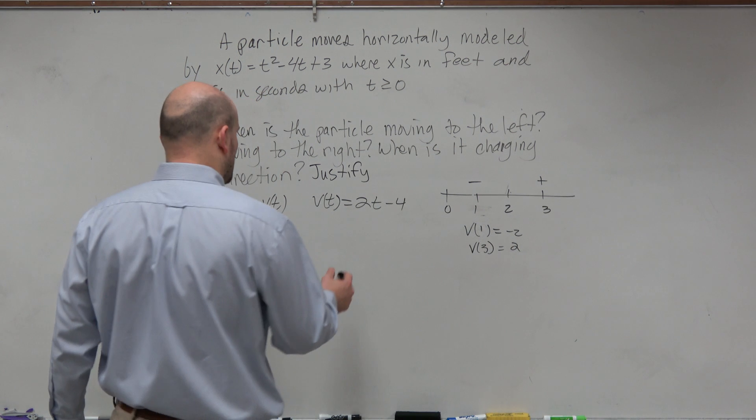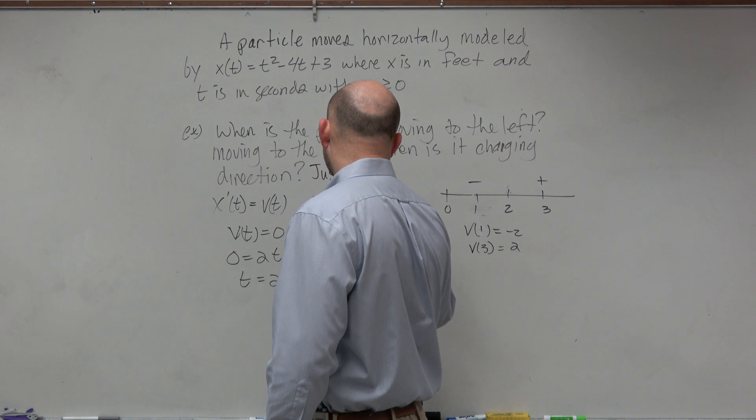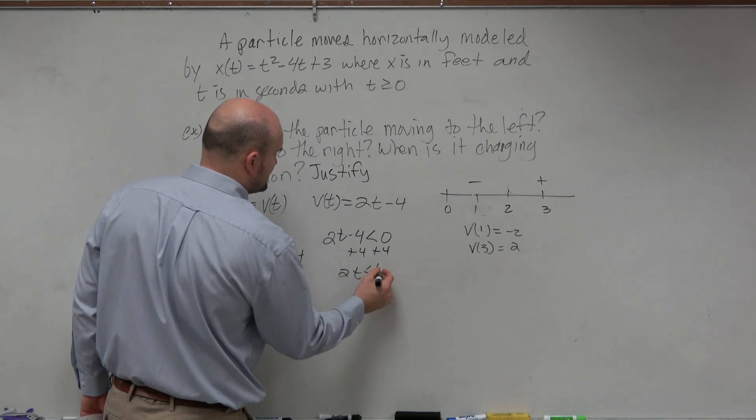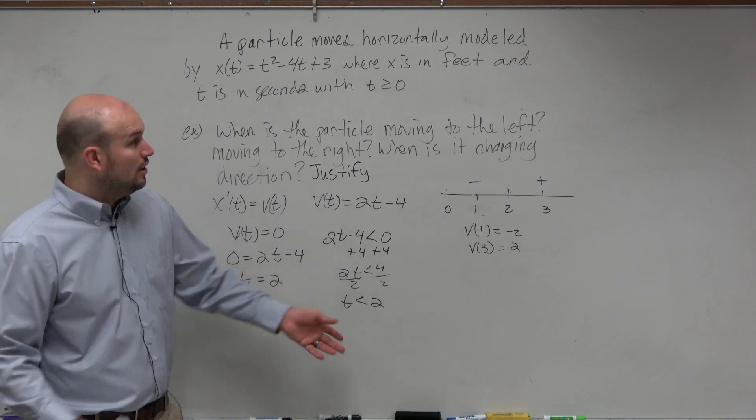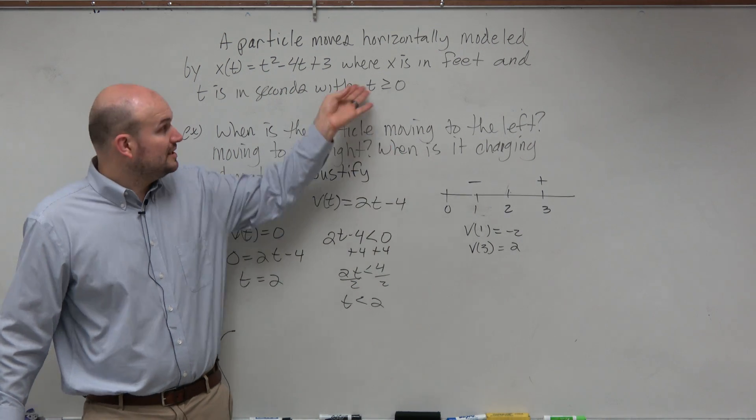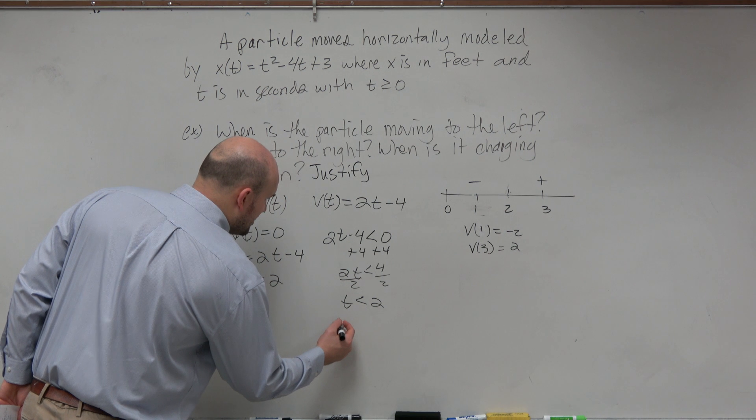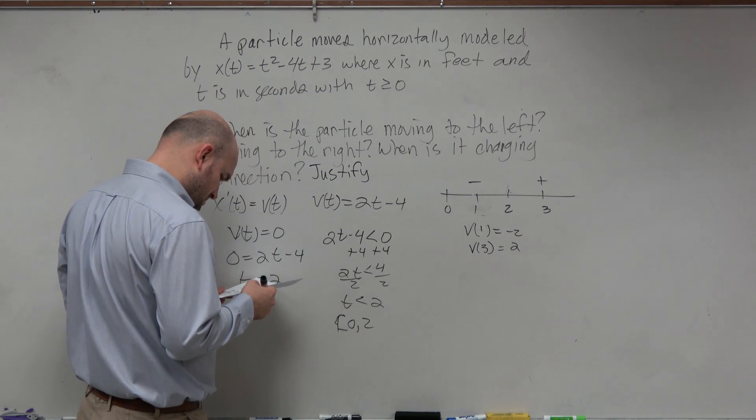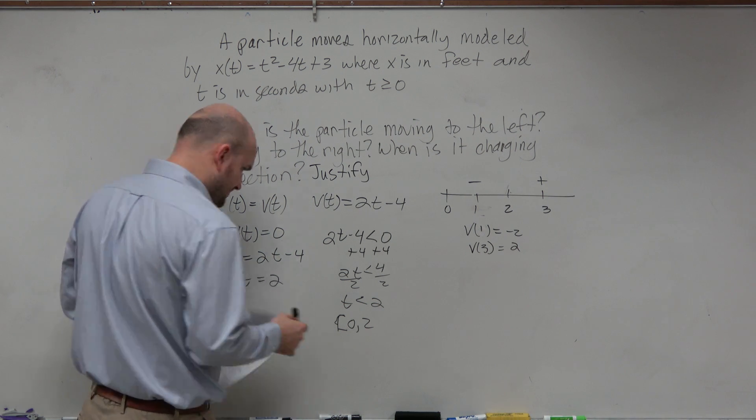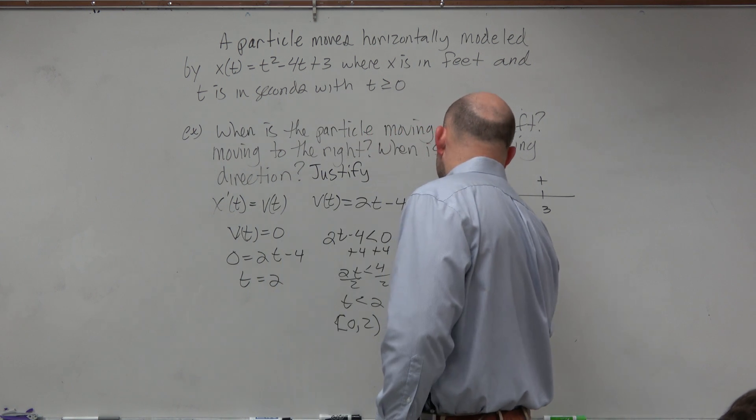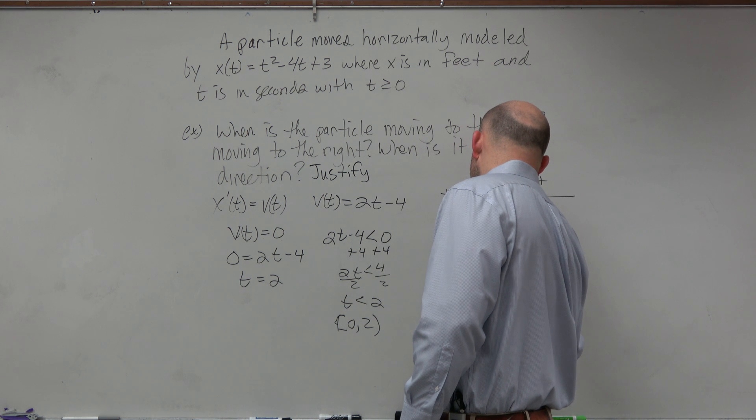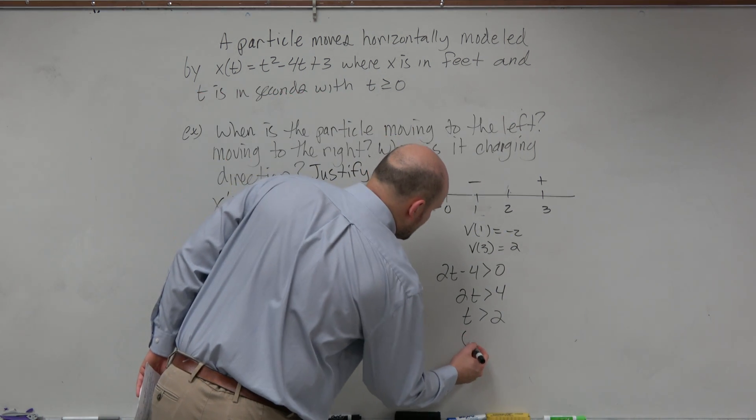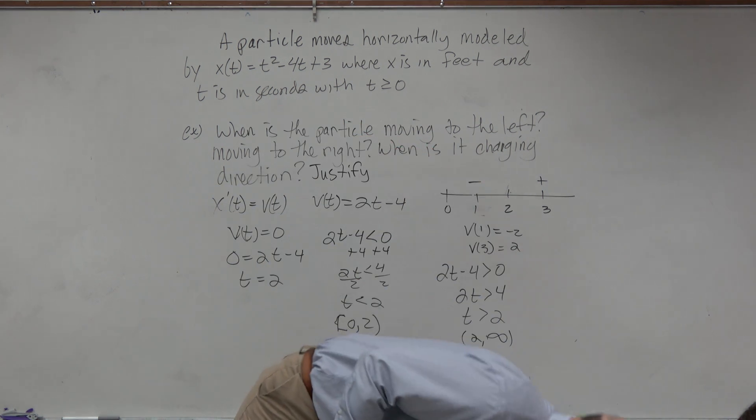We could also use inequalities. We could also say that if it's moving to the left, then 2t minus 4 has to be less than 0. And then we could just solve an inequality. 2t is less than 4, divided by 2, divided by 2. t has to be less than 2. But can we go all the way to like negative or something? No, because it says the time interval is from 0 to 2. So the interval is from 0 to 2. And then we could do the other set is 2t minus 4 is greater than 0 when t is greater than 2. So that would look like 2 to infinity or greater on. You could just use that inequality.